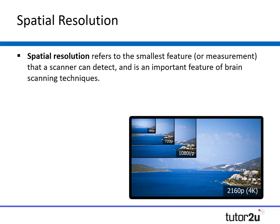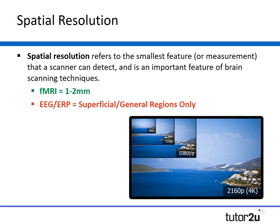Spatial resolution refers to the smallest feature or measurement that a scanner can detect. Much like wanting the best resolution on a television, we want the best resolution from brain scanners. fMRI has a spatial resolution of just one to two millimetres, making it very accurate, whereas EEG and ERP only look at superficial, general regions of the brain and therefore have a very low spatial resolution.